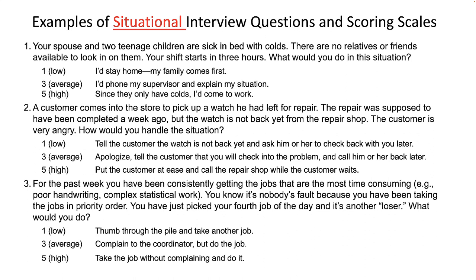This slide shows examples of situational interview questions and scoring scales. Each question presents a hypothetical situation. The scoring scales are developed using the critical incidence technique based on behaviors of existing job holders, and they guide the interviewer's scores by giving examples of better or worse ways to handle each situation. For example: 'Your spouse and two teenage children are sick in bed with colds. There are no relatives or friends available to look in on them. Your shift starts in three hours. What would you do?' If the applicant answers 'I'd stay home, my family comes first,' they get a 1. If they answer 'I'd phone my supervisor and explain my situation,' they get a 3. If they answer 'Since they only have colds, I'd come to work,' they get a 5.